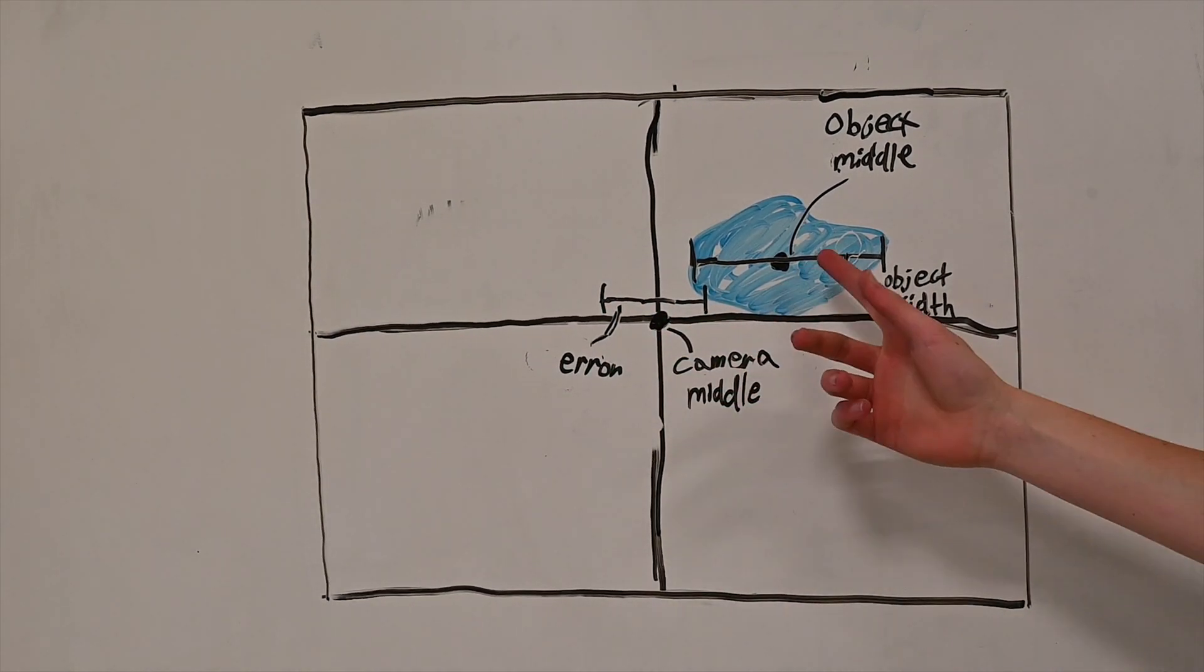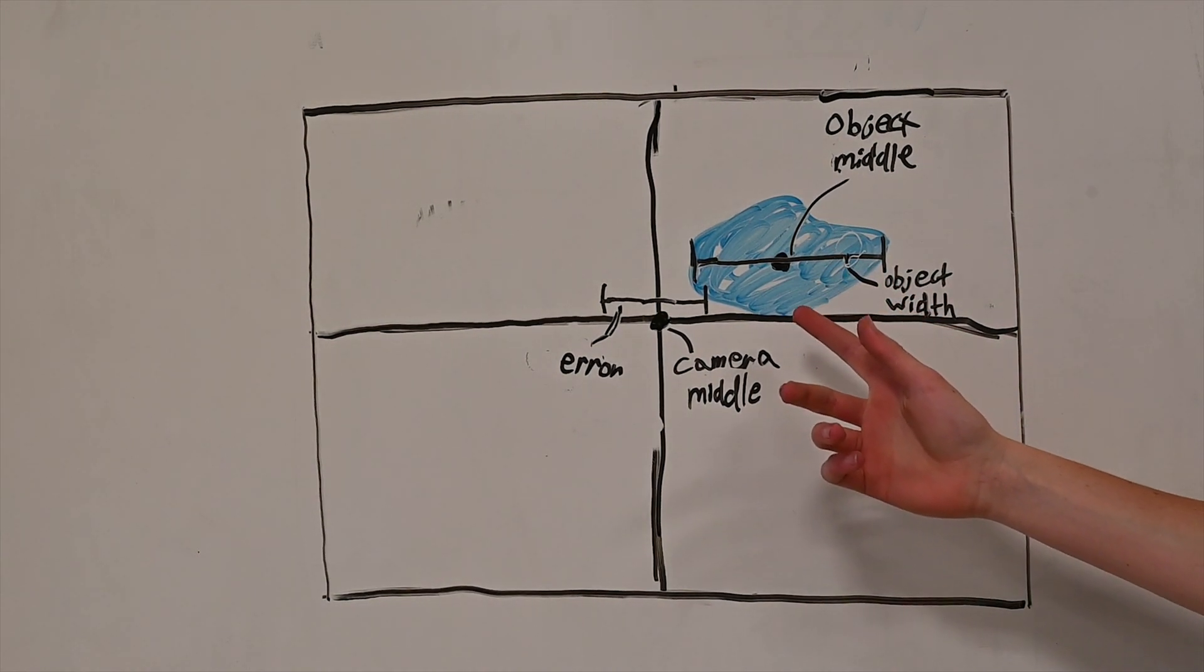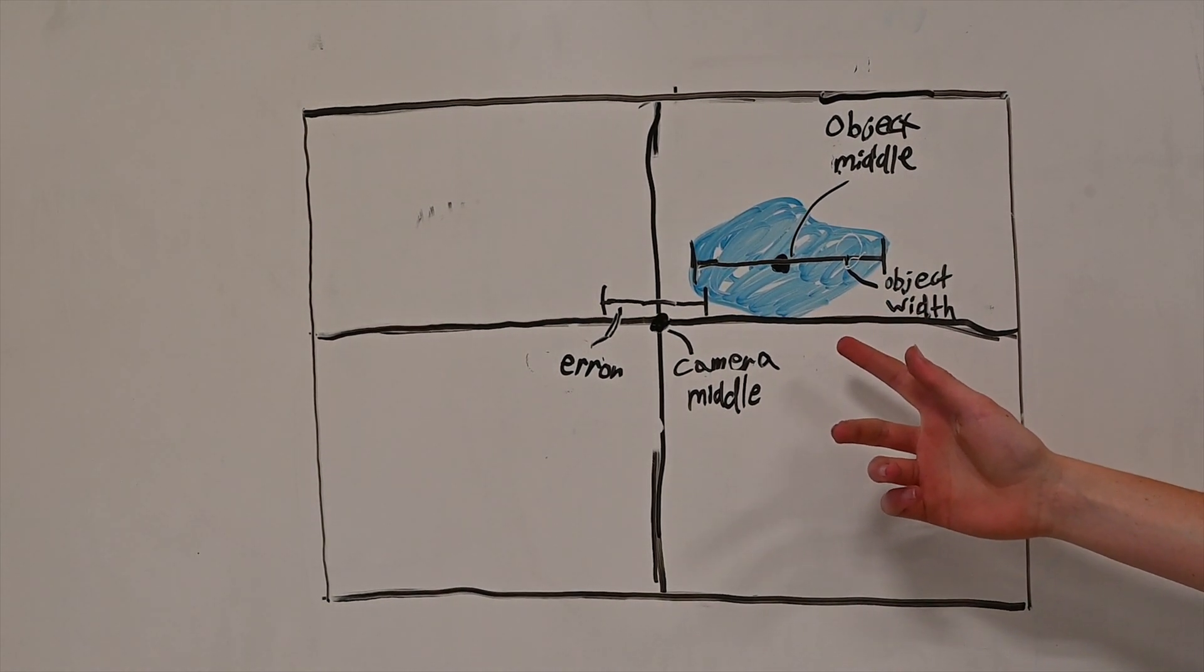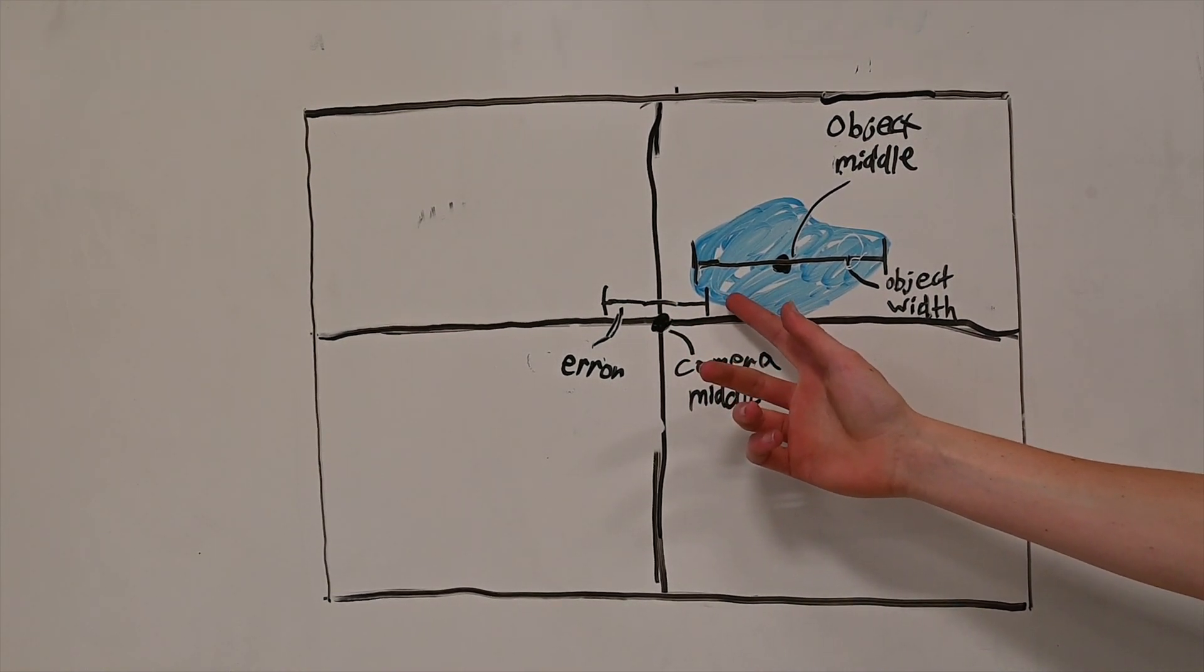The next thing is you take the object width, and that determines how far away the object is from the robot. And the final thing you do is you take the error to determine if the object is centered enough to stop.